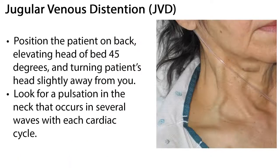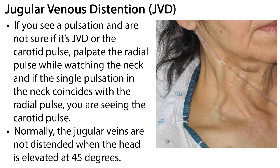Examine the extremities, looking for arterial or venous disorders — noting symmetry, edema, weeping, lesions, scars, and skin color. Check for jugular vein distension (JVD) by positioning the patient on their back, elevating the head of the bed 45 degrees, and turning the patient's head slightly away from you. Look for a pulsation in the neck that occurs in several waves with each cardiac cycle. If unsure whether it's JVD or the carotid pulse, palpate the radial pulse while watching the neck — a single pulsation coordinating with the radial pulse indicates the carotid pulse. Normally, the jugular veins are not distended when the head is elevated at 45 degrees.